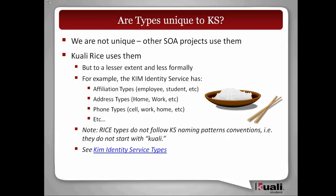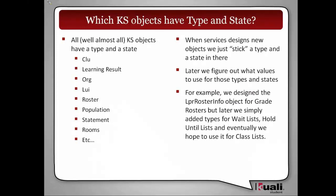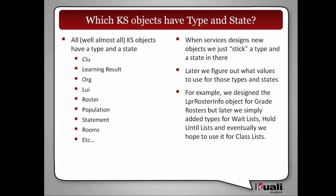In Kuali Student, when we create objects we put a type and a state on almost everything we design. We found that if we assume something doesn't have a type or a state, we end up getting hamstrung later on. If you design an object with one set of a couple of types, very often you can then model additional functionality really easily just by adding another type.